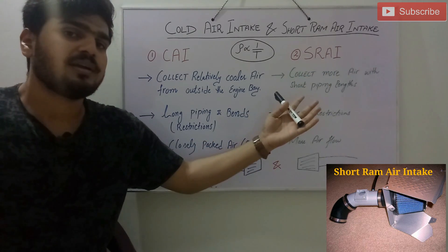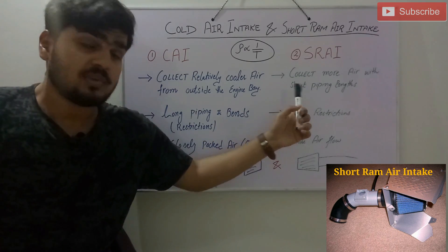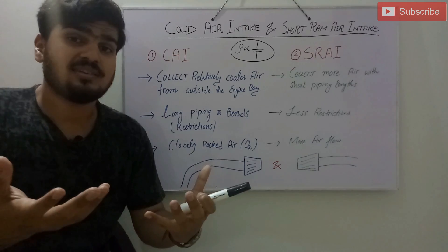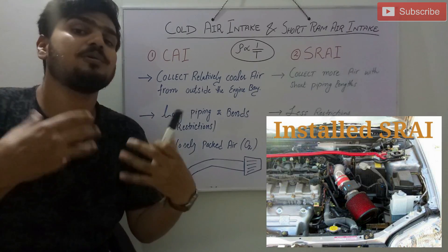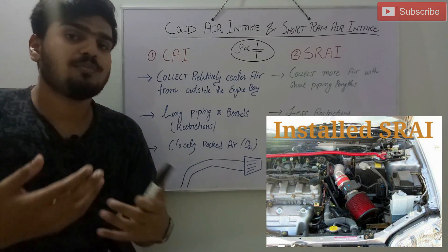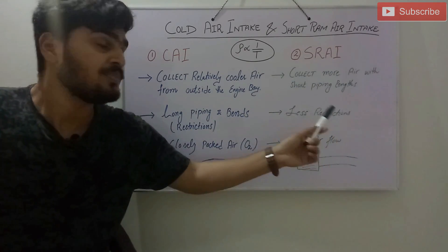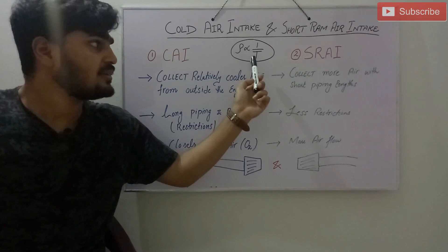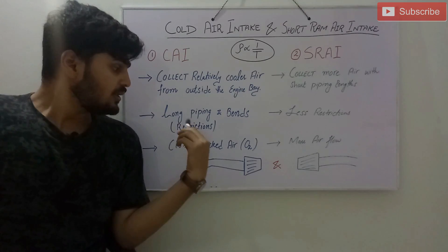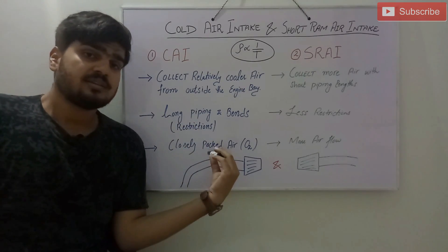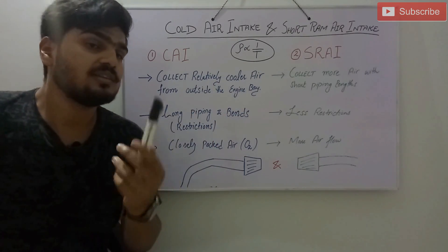Moving towards the short ram air intake system: it works on the principle that it collects more air with a shorter piping length and has very less restrictions, so it draws maximum air into the engine. Again, there will be an increase in volumetric efficiency and it will increase your engine power. As we can see, density is inversely proportional to temperature, so in a cold air intake the outside air temperature is relatively lower, meaning density will increase and volumetric efficiency will increase.